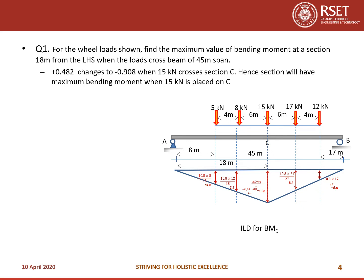The influence line diagram for the bending moment at section C has a peak value of C × (L − C) / L. With C = 18 and L = 45: 18 × (45 − 18) / 45 = 10.8. The ordinates just below each load are 4.8, 7.2, 8.4, and 6.8. The maximum bending moment at C is: 5×4.8 + 8×7.2 + 15×10.8 + 17×8.4 + 12×6.8 = 468 kNm.